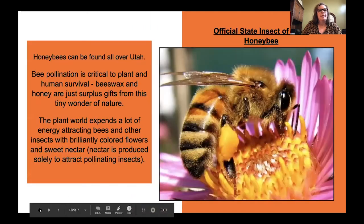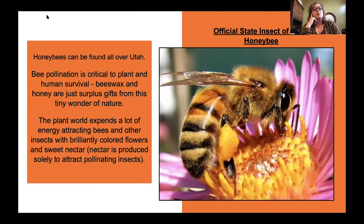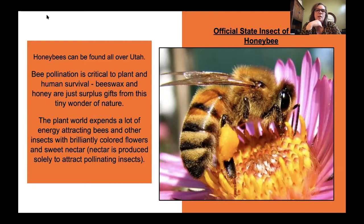Utah's state symbol is the beehive, so it makes sense that the official insect of Utah is the honeybee. Honeybees can be found all over Utah, and bee pollination is critical to plant and human survival. Beeswax and honey are just nice byproducts we get from this tiny wonder of nature. The plant world expends a lot of energy attracting bees and other insects with brilliantly colored flowers and sweet nectar — nectar is produced only to attract pollinating insects.